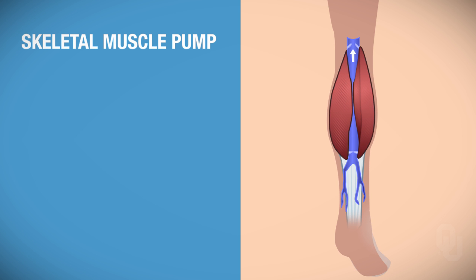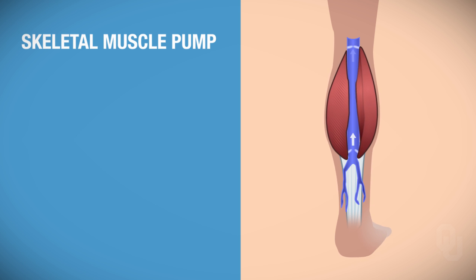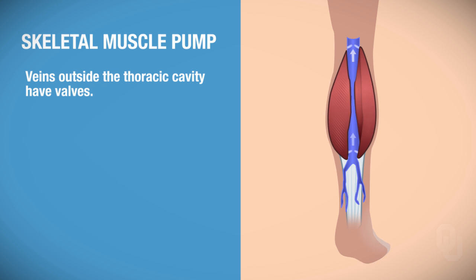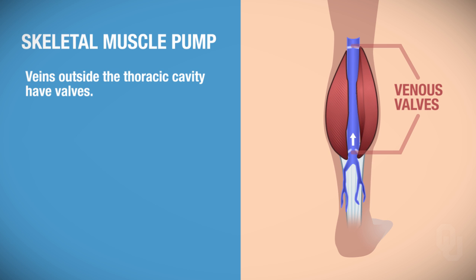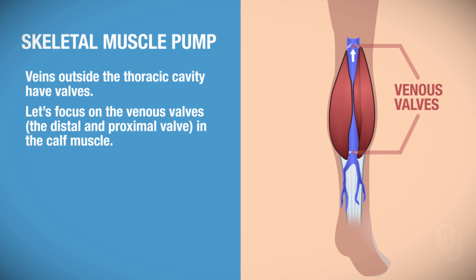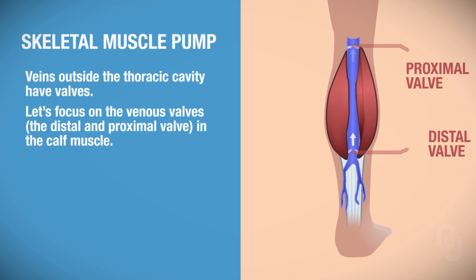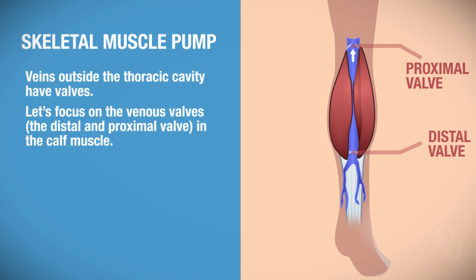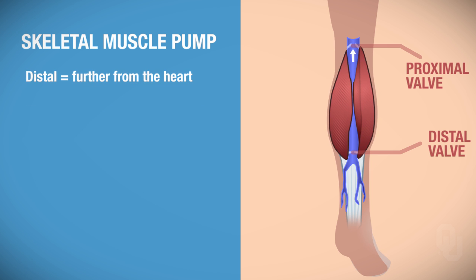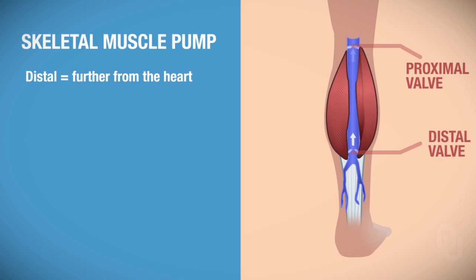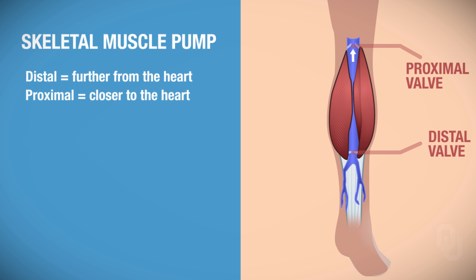When we deal with the skeletal muscle pump, you need to remember that veins outside the thoracic cavity have valves. We are going to focus on the venous valves, specifically the distal and proximal valves, in one location: the calf muscle. Keep in mind that distal means further away from the heart, and proximal means closer to the heart.